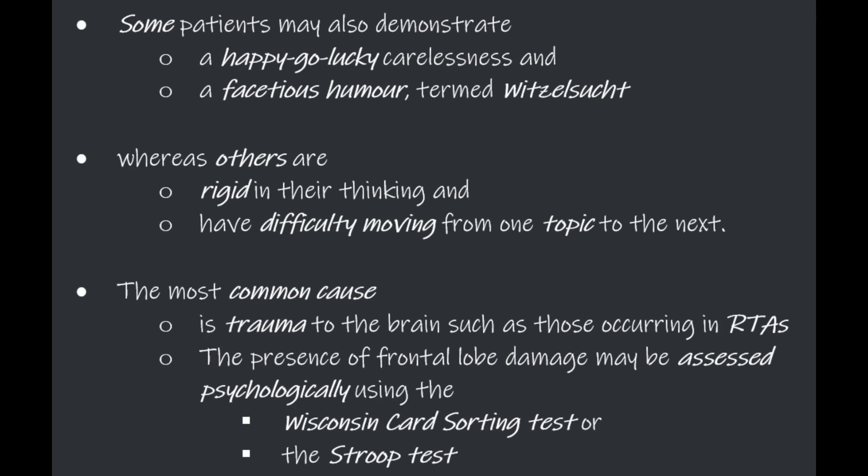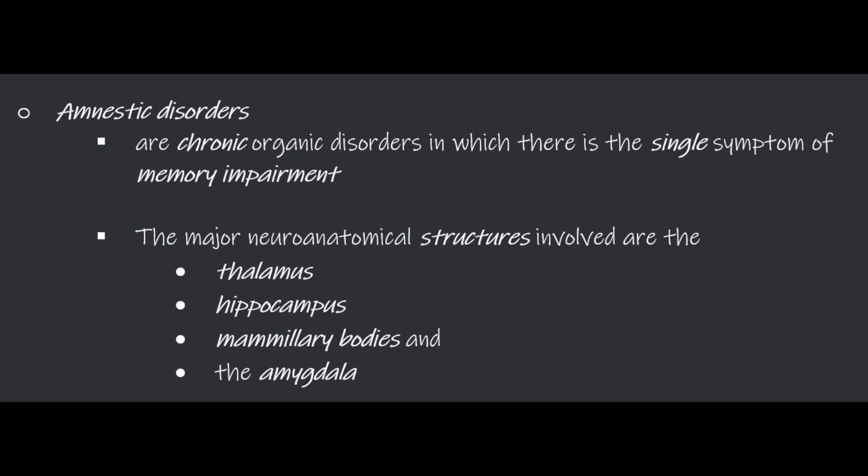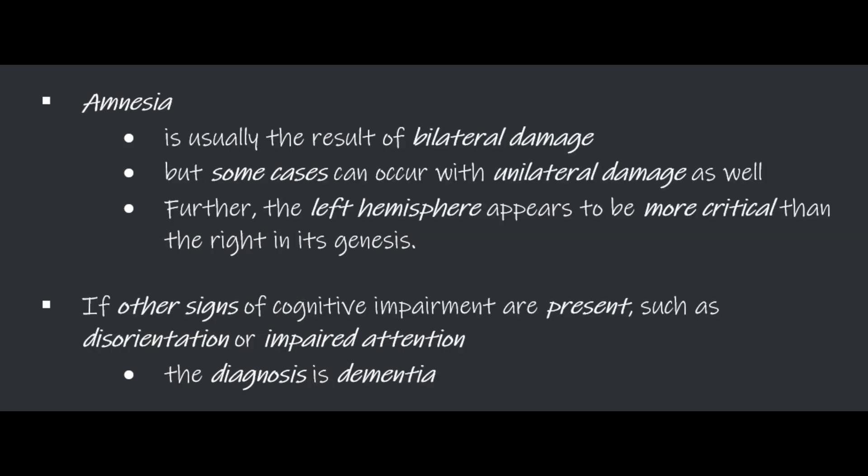The presence of frontal lobe damage can be assessed psychologically using the Wisconsin Card Sorting Test or Stroop Test. Amnestic disorders are chronic organic disorders in which there is the single symptom of memory impairment. The major neuroanatomical structures involved are the thalamus, hippocampus, mammary bodies, and the amygdala. Amnesia is usually the result of bilateral damage, but in some cases can occur with unilateral damage as well. Interestingly, the left hemisphere appears to be more critical than the right in its genesis. But if other signs of cognitive impairment are present, such as disorientation or impaired attention, the diagnosis is dementia.